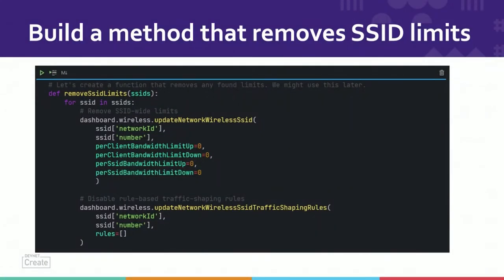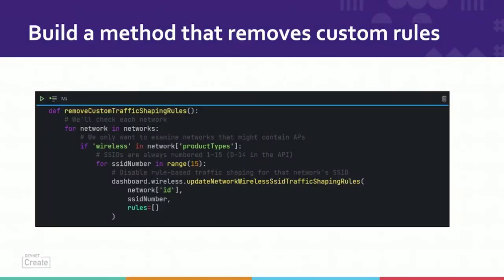Rather than building a script in a very linear fashion, we can build a function that we can call at any time. If we ever needed to do this type of thing again in any other application, we could just copy and paste the code. Next, we're going to build a method that removes the custom traffic shaping rules. The custom rules are a different object, a different parameter, so we're defining a separate method that handles those.